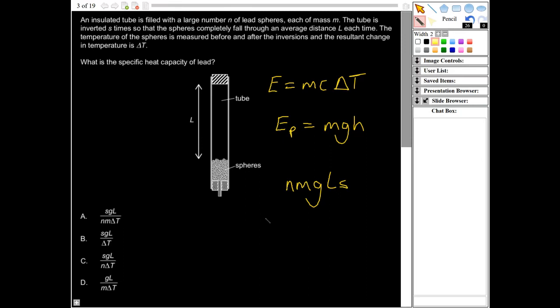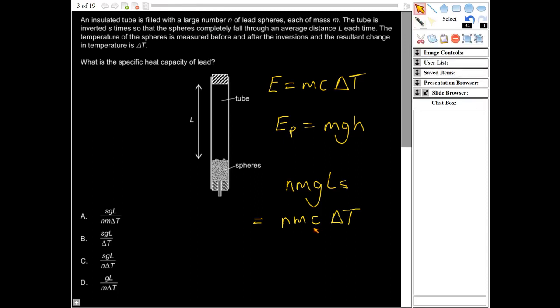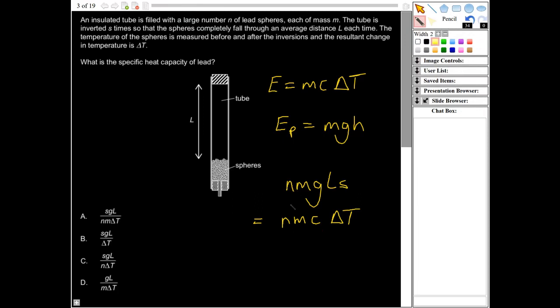And then that is going to equal our mass, which that's m in this equation here, is the mass for the whole of this lead. So we're going to need to do n times m, c, and then delta t. So those two are going to be equal to each other. And then what we're trying to find here is this c, which is a specific heat capacity. So you can see that n and m are going to cancel out. So c delta t would equal ls, g ls, and then I can divide by delta t. So c is going to be, let's write that around the other way, s g l over delta t, which is B.